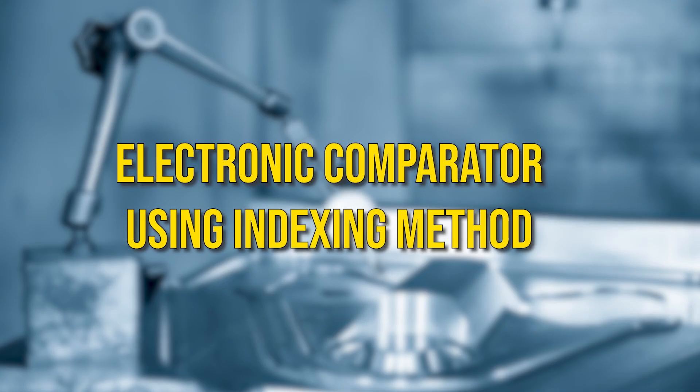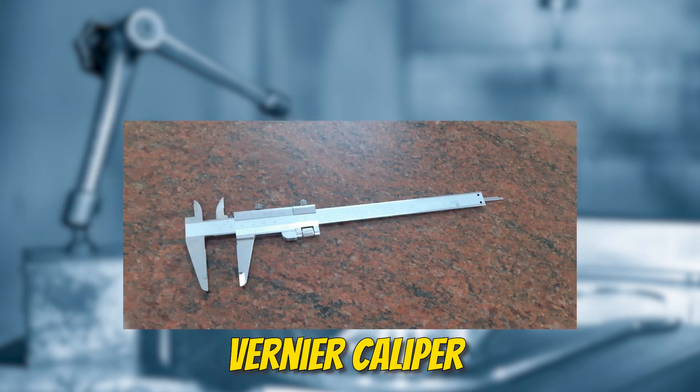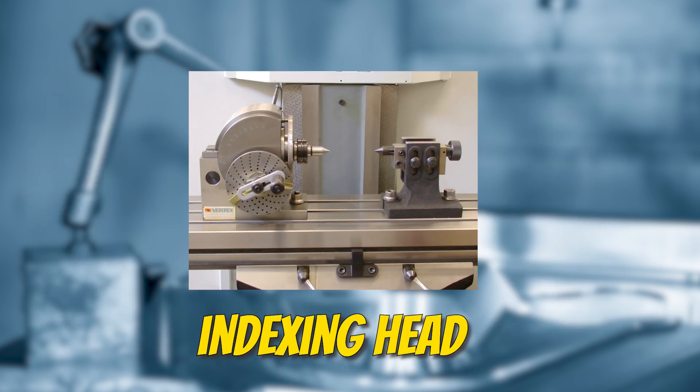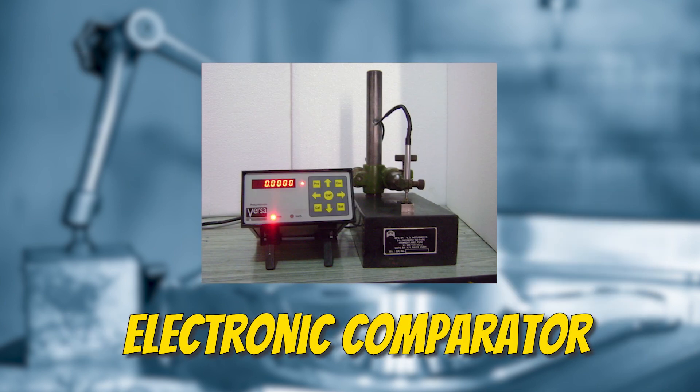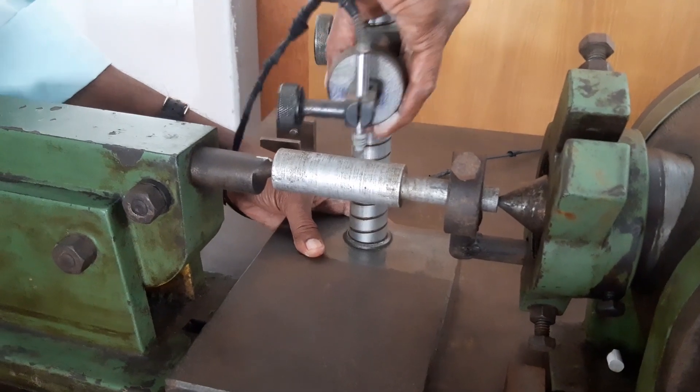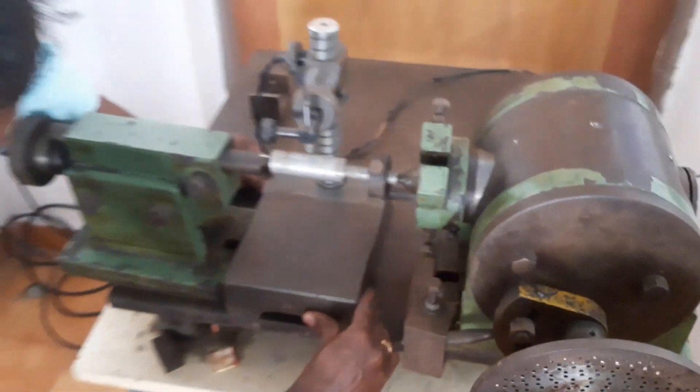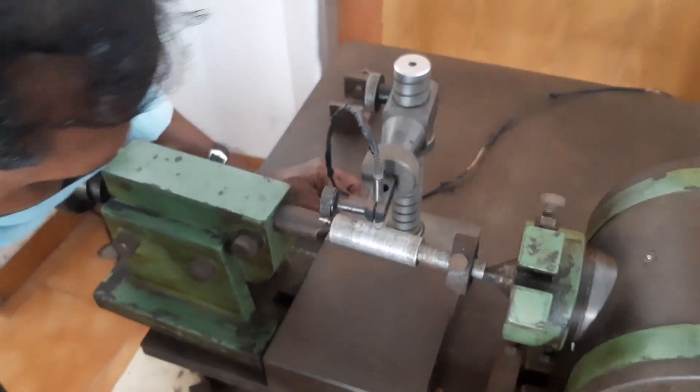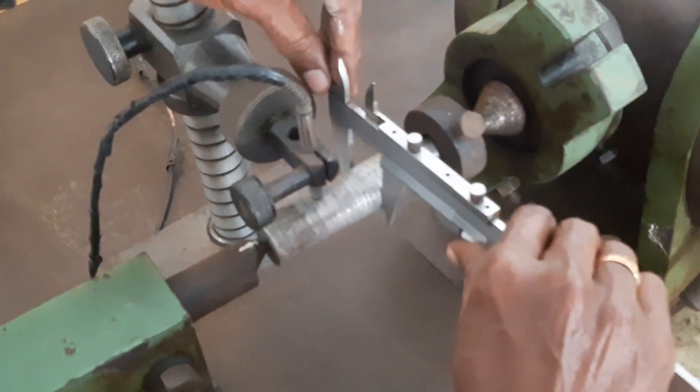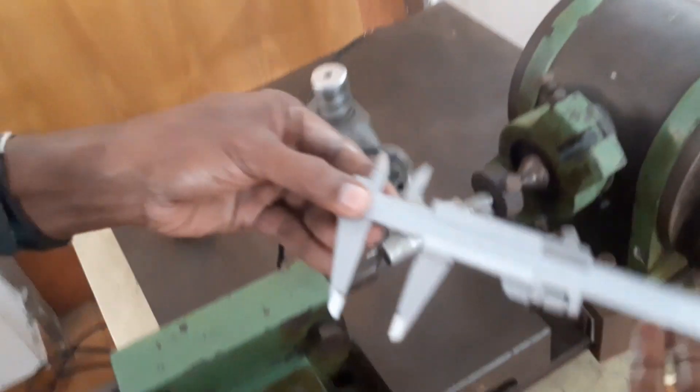Now the second part of the experiment is electronic comparator using indexing method. For this experiment the required apparatus are vernier caliper, indexing head, and electronic comparator. We have to place the workpiece in the indexing head and place the electronic comparator on the workpiece, same as the previous experiment. Measure the diameter of the workpiece using vernier caliper.